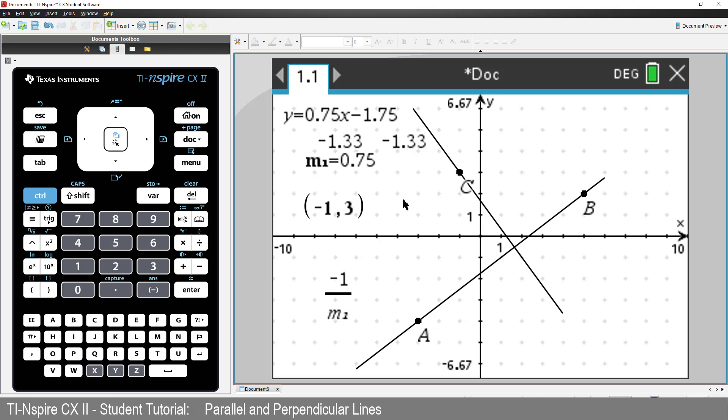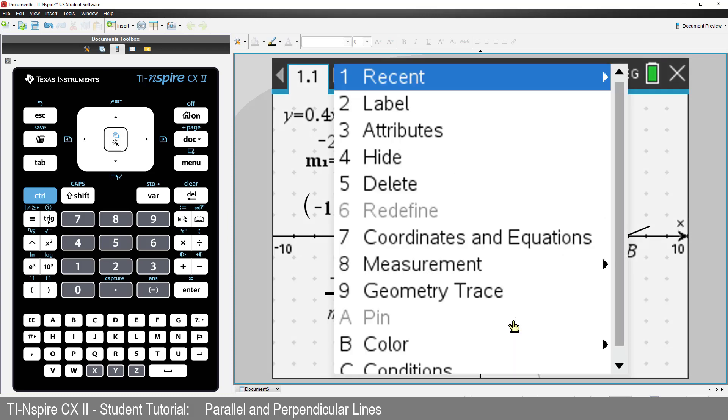Now, let's move the original line. Our calculation appears to be the same as the gradient of the perpendicular line that we constructed. I'll delete the perpendicular line.